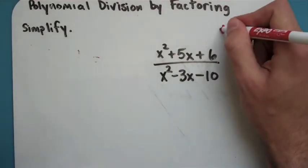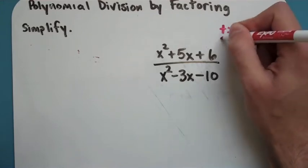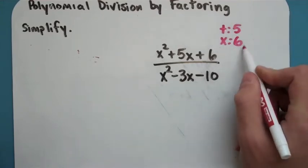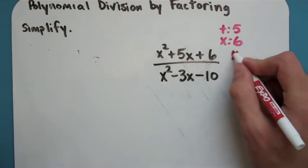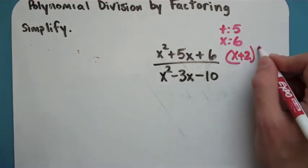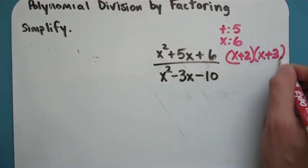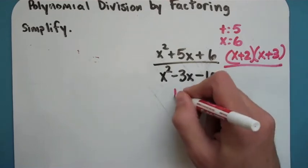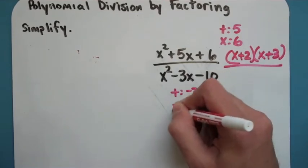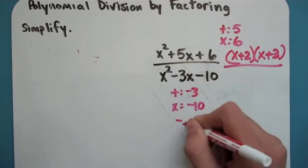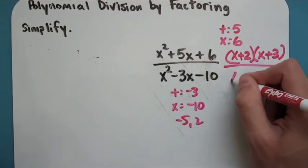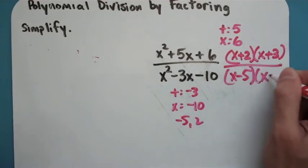I'm going to do my factoring super fast here. Since it's just 1x squared, I can use my shortcuts. The top is going to factor into x plus 2 times x plus 3. And the bottom, if I do my magic numbers, I need to add to negative 3 and multiply to negative 10. It'll be negative 5 and 2, which will be x minus 5 and x plus 2.